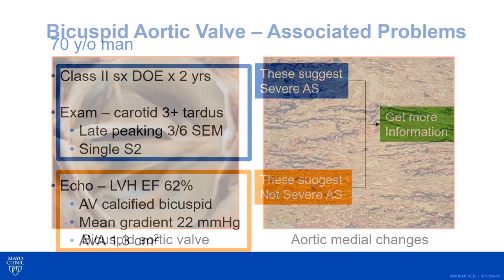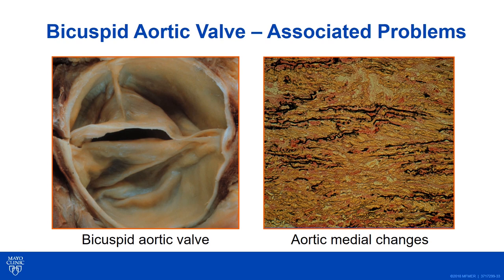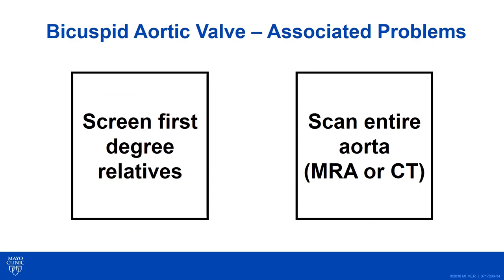Now, back to the bicuspid aortic valve. An important issue: the aorta is often abnormal in patients with bicuspid aortic valve, so you must address that. Bicuspid aortic valve can also be familial, so it's important to screen first-degree relatives and to look at the aorta. At initial evaluation, do one methodology that scans the entire aorta to see both ascending and descending portions — remember bicuspid aortic valve is also associated with coarctation. If echo images sufficiently show the aortic root and ascending aorta and track with CT or MRA, you can use echocardiography to follow in the future; if discrepant, you'll need to repeat those other imaging modalities.